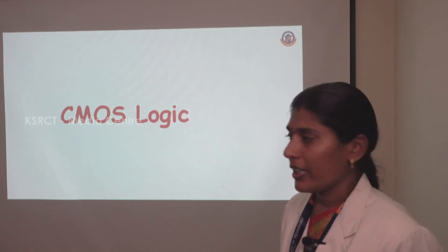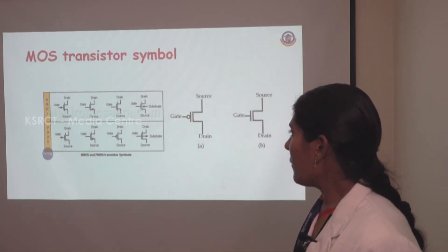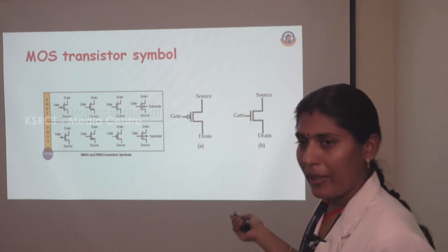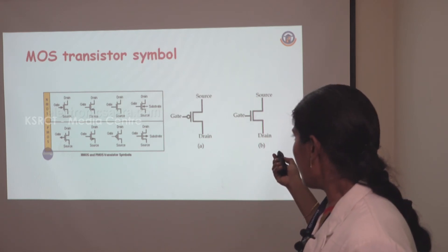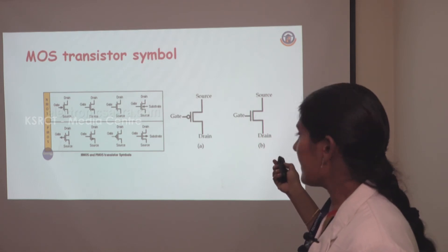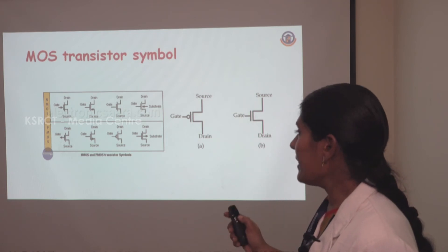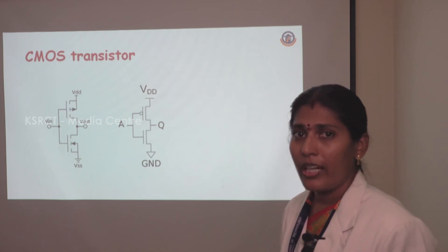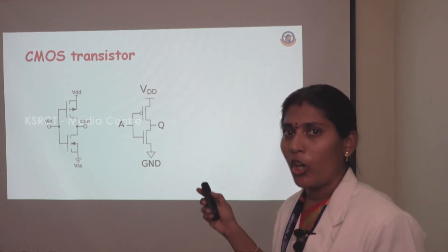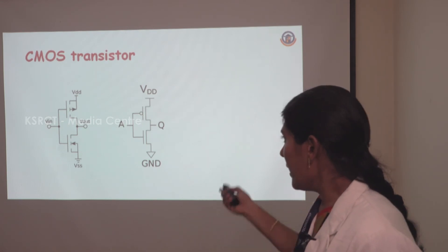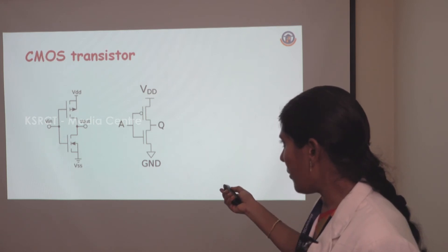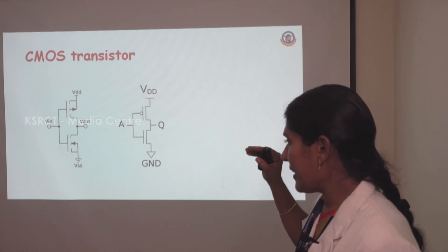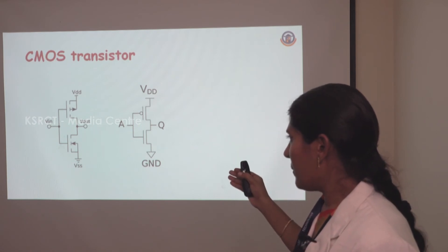Next topic is CMOS. This shows the transistor symbols for PMOS and NMOS transistors. The bubble at the gate terminal indicates a PMOS transistor symbol. Without the bubble at the gate terminal, it is the NMOS transistor symbol. In CMOS, which combines NMOS and PMOS, the NMOS transistor is placed at the bottom and the PMOS transistor is always placed at the top of the symbol.